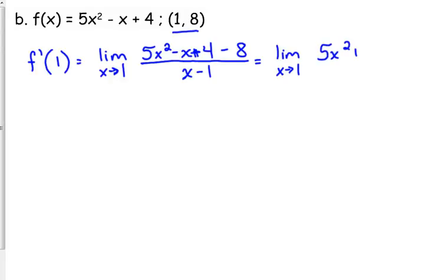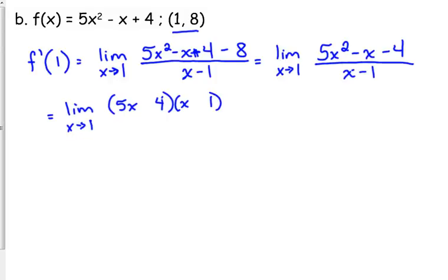We need to combine those like terms in the numerator. 4 minus 8 is negative 4. This one's factoring not so bad. 5x and 4 and x and 1. How do I know that? Because I know that x minus 1 has got to cancel. Use your experience with these problems to help you work them out.